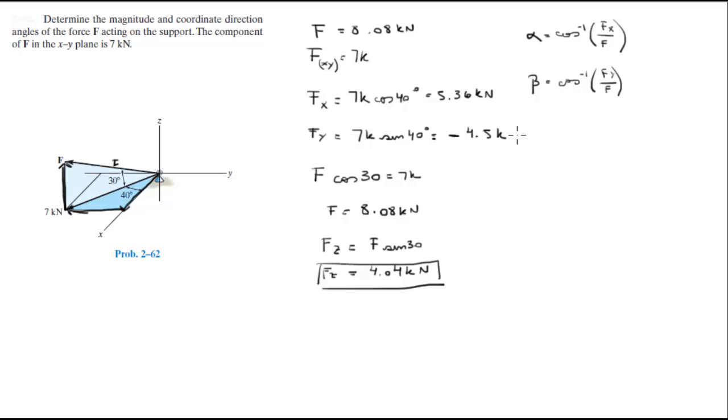divided by F. And the last angle, which is the angle that it forms with the z-axis, is cosine inverse of Fz divided by F.